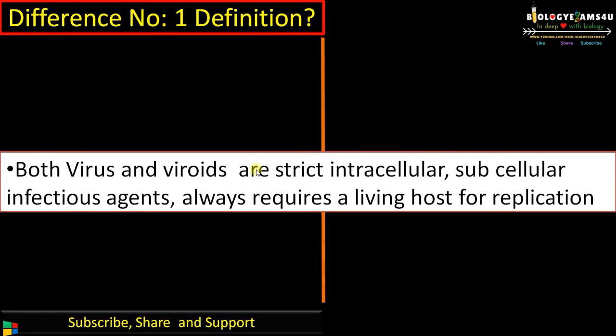Let's begin with the similarities of virus and viroids. Both virus and viroids are strict intracellular, subcellular infectious agents that always require a living host for replication. Both don't have an independent existence.